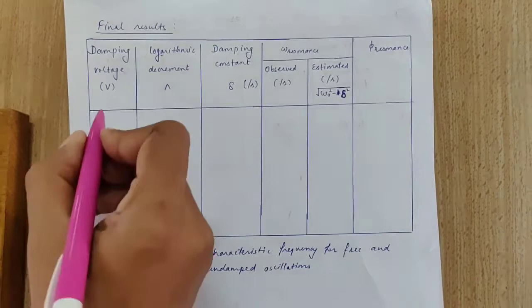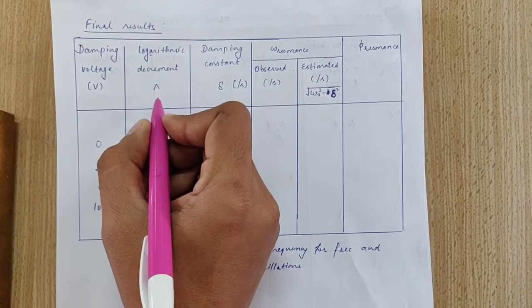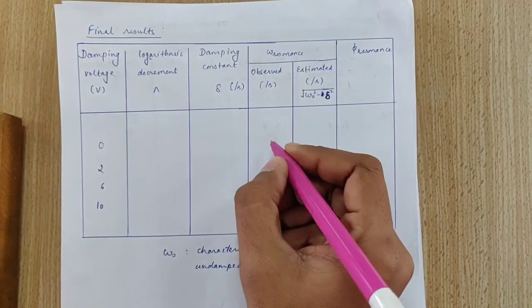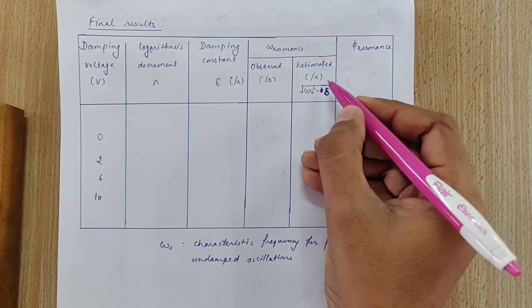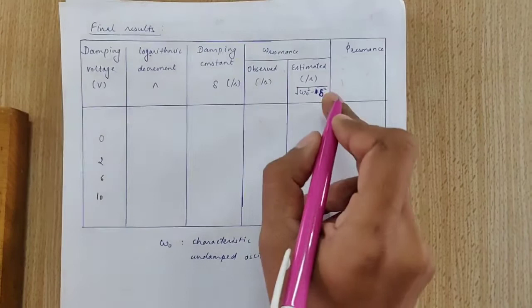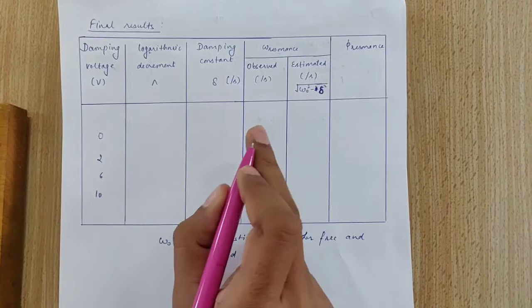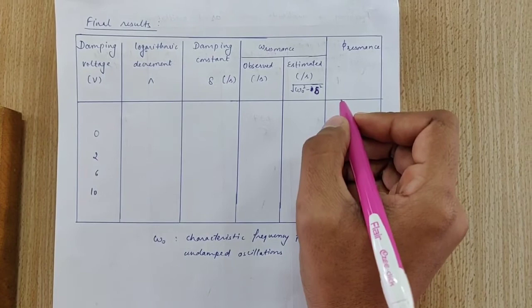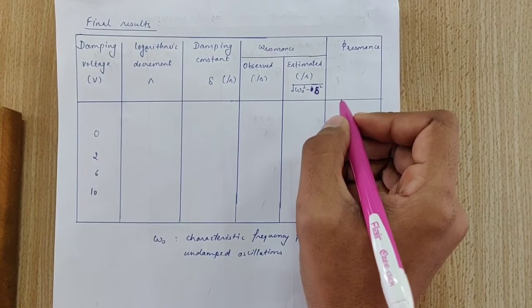These are our final results. These are the damping voltages, and these are the values of logarithmic decrement and damping constant attained at different damping voltages — values we had calculated earlier. We have observed the resonance frequency for the undamped and damped cases. Using the formula involving the characteristic frequency for the free undamped oscillations and the damping constant, we can estimate the resonance frequency. The observed and estimated values of the resonance frequencies should be approximately the same. This is the value of the resonance amplitude achieved at the resonance frequency.